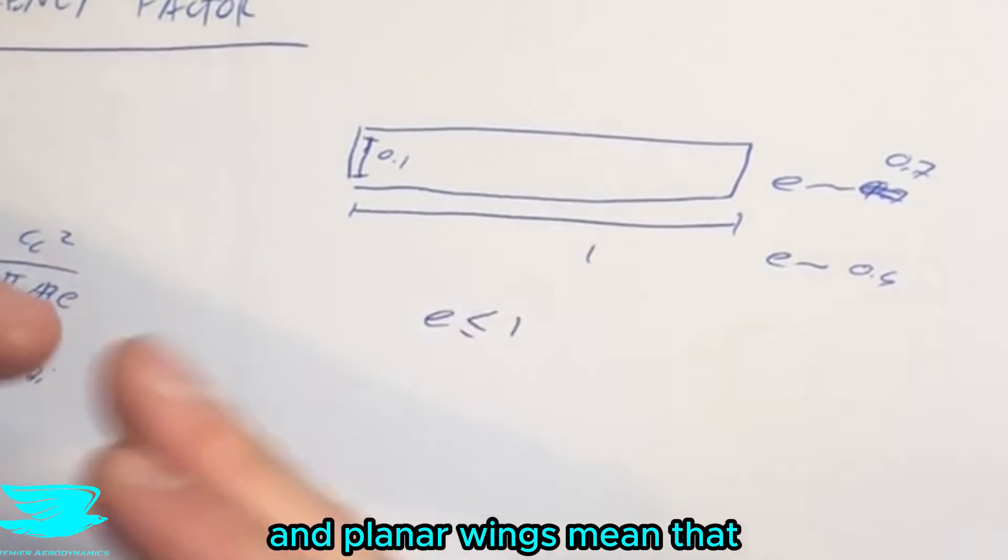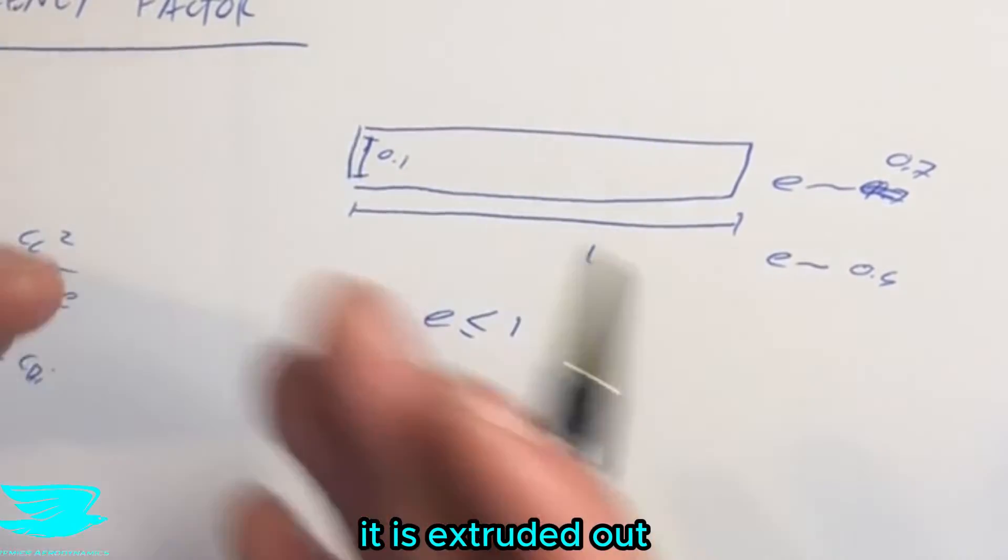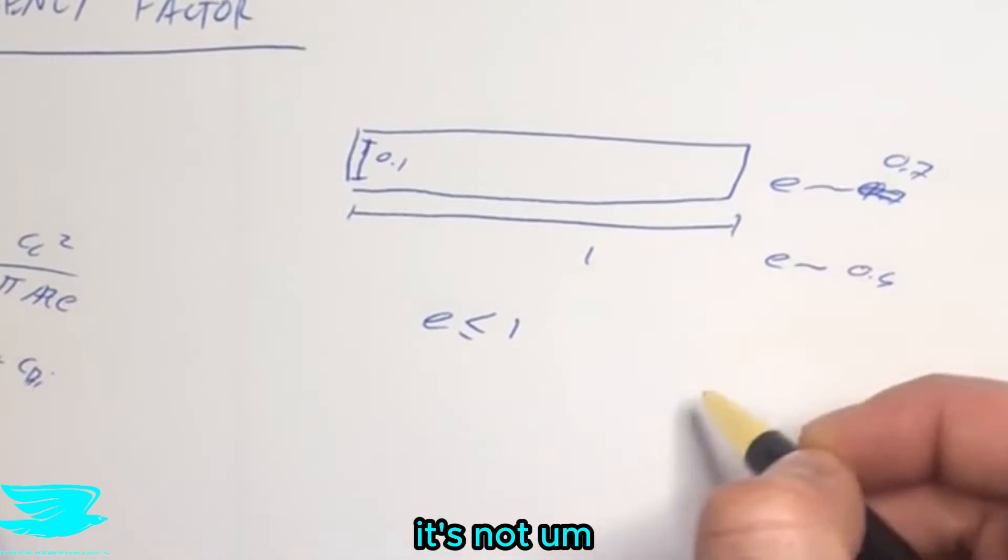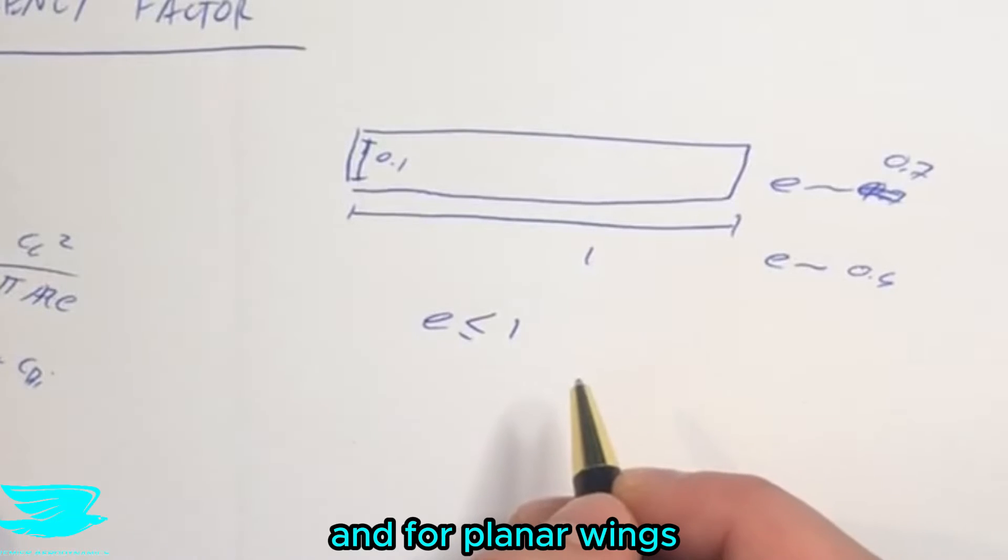And planar wings means that the wing is really just in one plane, so two dimensions. It's extruded out, but it's not going up. It's not flexing at all, or there's no wing tips or anything like that.